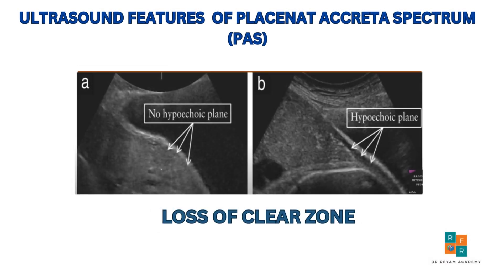The second feature is the loss of the clear zone. This clear zone refers to the retroplacental zone, which is located between the placenta and the myometrium. On ultrasound, it appears as a dark hypoechoic band or clear space. The presence of this hypoechoic zone is usually a normal finding, indicating that the placenta is properly attached to the uterus and that the decidual basalis is intact. Loss of this zone may suggest abnormal placental invasion, as seen in placenta accreta spectrum.